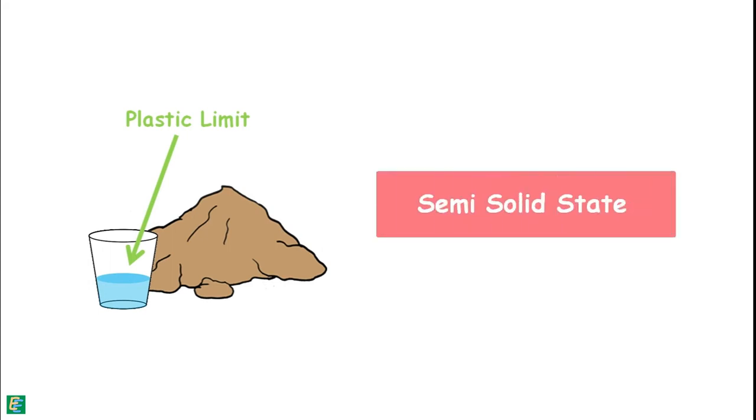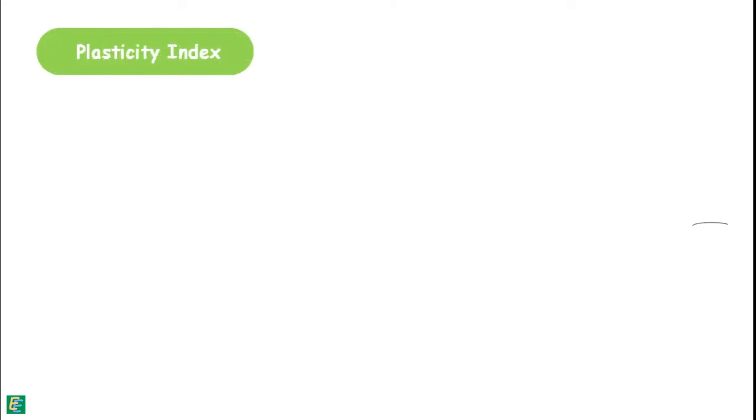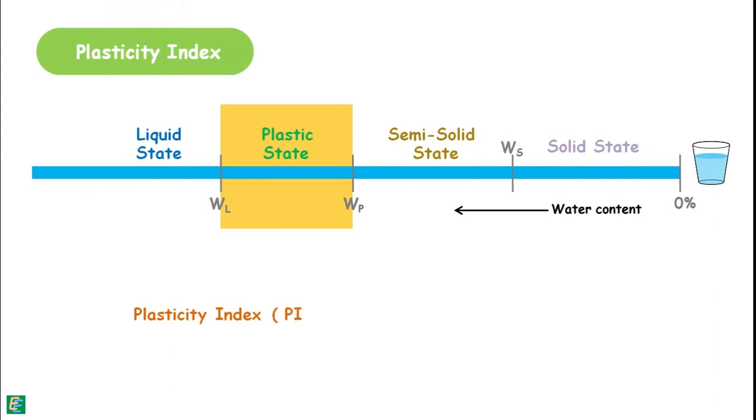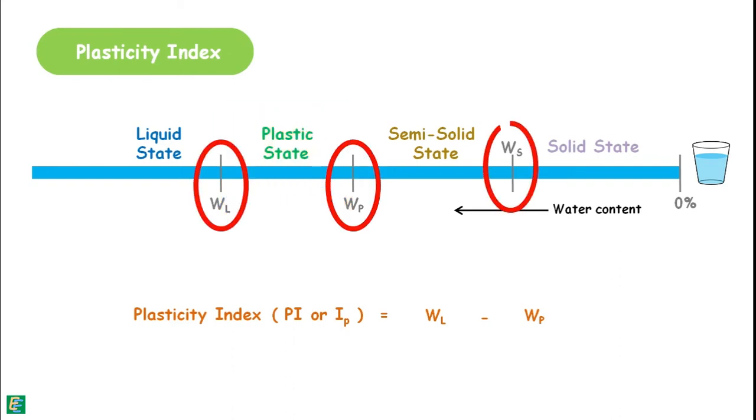Here we define a quantity plasticity index, which is the range of water content over which the soil remains in plastic state. We represent plasticity index as PI or IP, and it is defined as the difference between the numerical value of liquid limit and plastic limit. These limits are water content values at which soil changes its behavior.